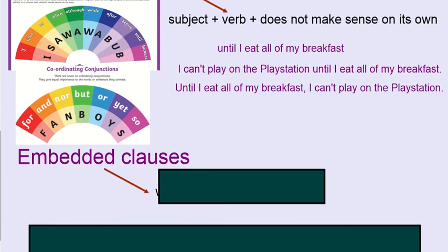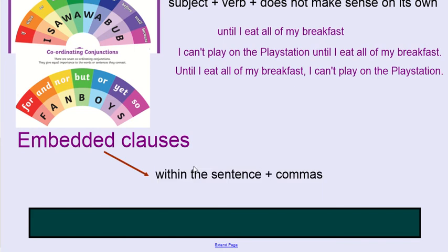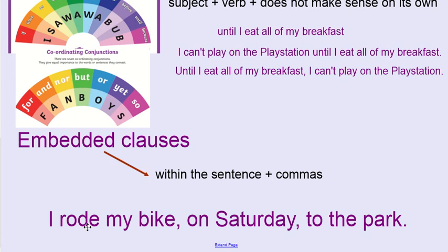We ended the week by looking at embedded clauses. What can you remember about embedded clauses? Embedded means within the sentence, and it has to have a comma on either side. We have our embedded clause within the main clause, with a comma on either side. If I was to take that part out, my main clause would still make sense: 'I rode my bike to the park.'